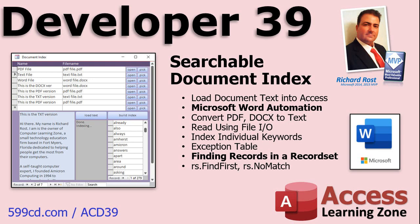We're going to learn how to use Microsoft Word Automation. In VBA, we'll be able to click a button and have Microsoft Word open up in the background to read in the file — whether it's a PDF, a text file, a Word document, or any document type that Word supports. We'll take that document, save it as text, then pull the text into our Access database and index all the keywords. We'll also build an exception table so we don't have to bother indexing words like 'the,' 'in,' or 'at.'